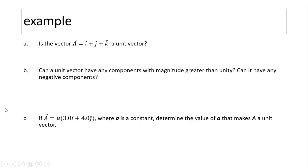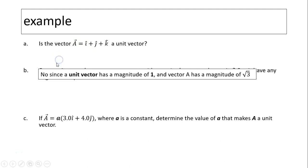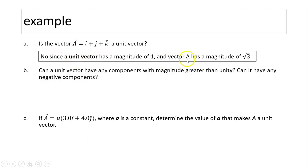Now let's take a look at the next example. Is the vector a equals i plus j plus k a unit vector? Well, a unit vector has a magnitude of 1. Does this vector have a magnitude of 1? Answer is no, because this vector has a magnitude of square root of 1 plus 1 plus 1, which is square root of 3. Now, can a unit vector have any component with a magnitude greater than unity? The answer is no.